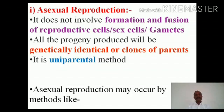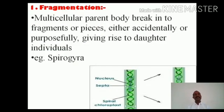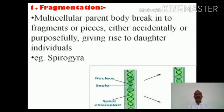Asexual reproduction may occur by different methods. Starting with the first one, it is called fragmentation. Many times, multicellular parent bodies may break up into fragments either accidentally or purposefully, and these pieces give rise to daughter individuals. You might have seen Spirogyra, a filamentous algae. This filamentous algae may be accidentally or purposefully broken down in the middle, giving rise to two fragments which may develop into independent Spirogyra.